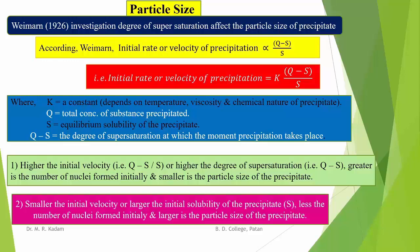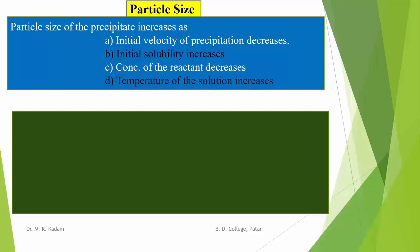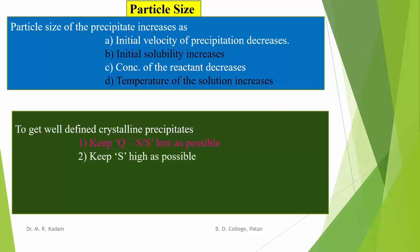Conversely, when the initial velocity is smaller or the initial solubility of the precipitate is larger, then fewer nuclei are formed initially and larger is the particle size of the resulting precipitate. Particle size of the precipitate increases as the initial velocity of precipitation decreases, or initial solubility increases, or the concentration of the reactants decreases, or the temperature of the solution increases. To get well-defined crystalline precipitates, we must keep Q minus S divided by S as low as possible, keep S as high as possible, and keep Q minus S as low as possible.